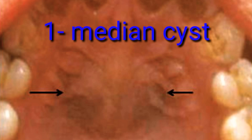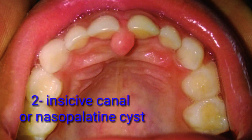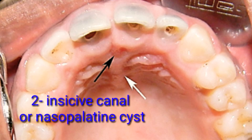Developmental non-dental cysts such as Median cysts are bone cysts that form in the median fissure of the palate from embryonic remnants. Incisive canal or nasopalatine cysts are located in the center of the bone but do not expand inside the bone, nor do they significantly alter the overlying mucosa. These cysts give no clinical symptoms unless they become secondarily infected.